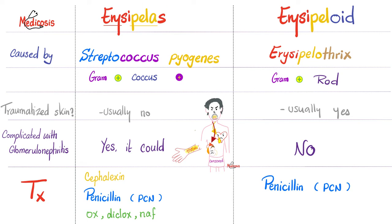Now for the comparison: erysipelas is caused by streptococcus pyogenes — a gram-positive coccus — while erysipeloid is caused by erysipelothrix — a gram-positive rod. Traumatized skin is not required for erysipelas, but is usually required for erysipeloid. Since erysipelas is a subtype of streptococcal pyogenic skin disease, it can be complicated by acute glomerulonephritis — but erysipeloid cannot.